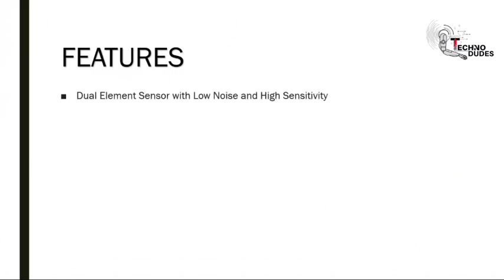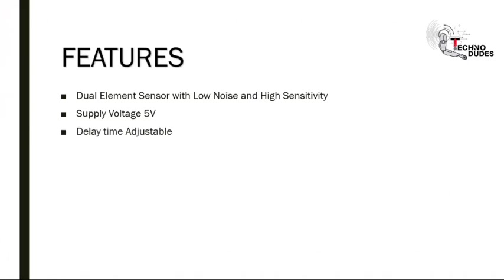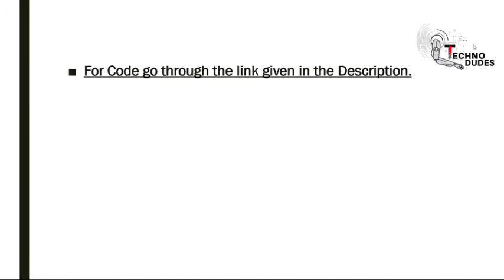The features of the PIR sensor are: first, dual element sensor with low noise and high sensitivity; second, supply voltage of 5V; third, delay time is adjustable — the time delay adjustment determines how long the output of the PIR sensor module will remain high after detecting motion; and fourth, standard TTL output.